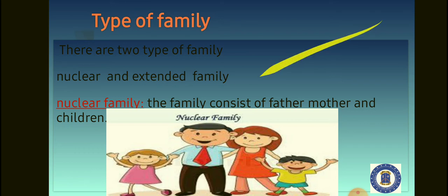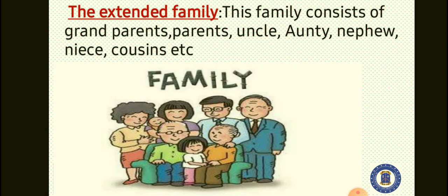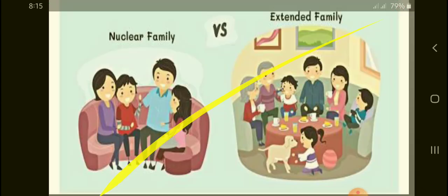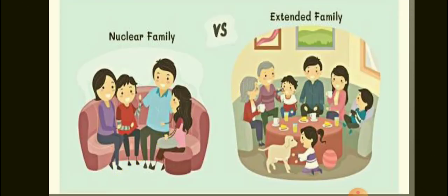Now we'll move to the extended family. The extended family consists of the grandparent, your parent, your uncle, your auntie, your nephew, the niece, the cousin. If you look at this picture, you will see grandmother, grandfather, father, mother, your uncle, your auntie, your niece. They are a large family that lives together in one house, consisting of both the nuclear family members and the uncle and auntie. Now I would like us to see the differences: in the nuclear family, you see only the father, the mother and the children, while the extended family includes the father, the mother, the auntie and the uncle — they are much more in the extended family.